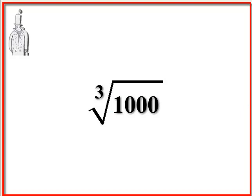The trick is to break down a thousand into a factor such that it's the same number and it's got to be multiplied by itself three times.